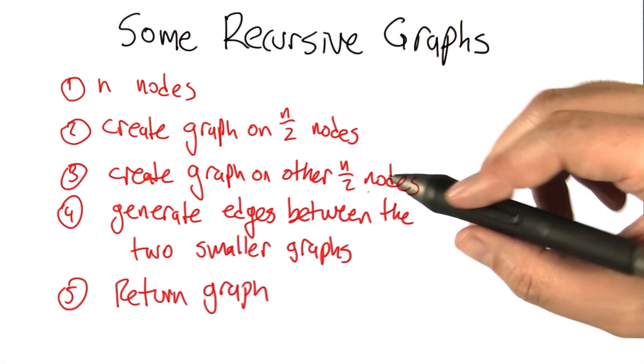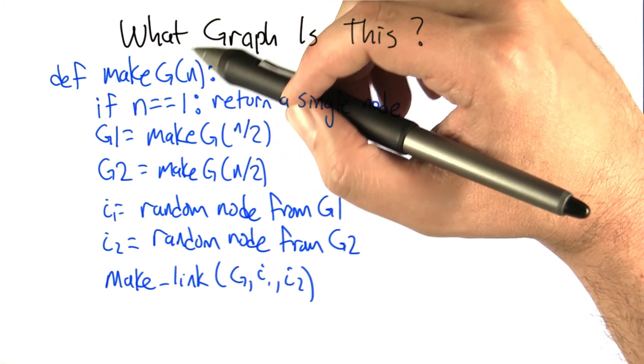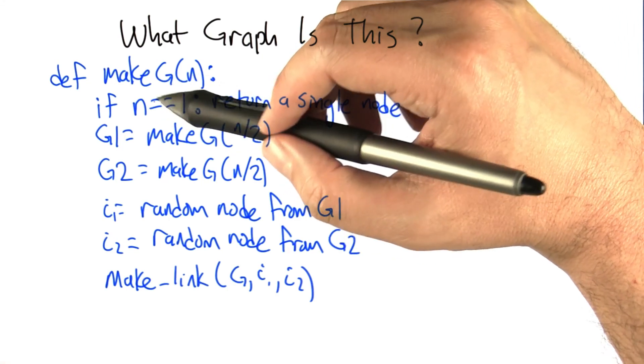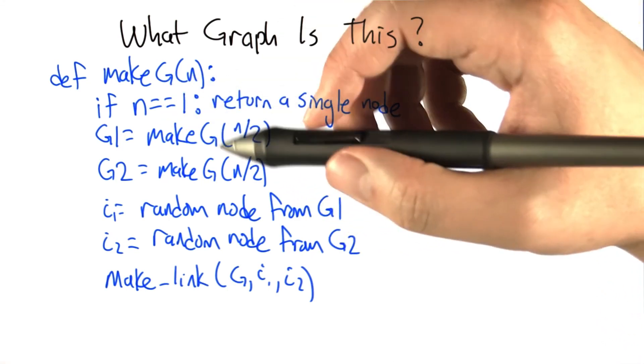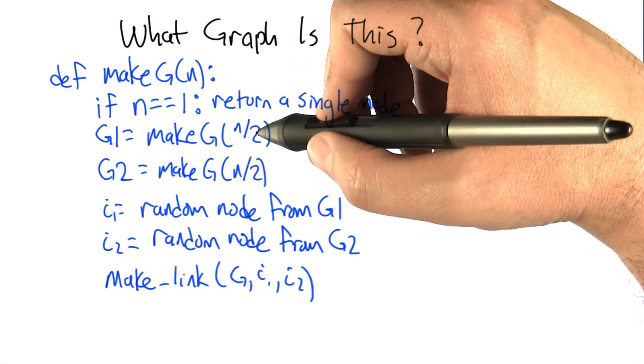So let's start off with a really simple example. Here's some pseudo Python for generating a graph with n nodes. What it's going to do is make a graph with n nodes. If n is just 1, it returns a single node all by itself. But if it's not, we're going to assume it's some other power of 2.